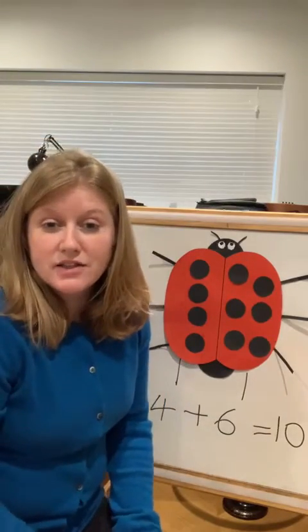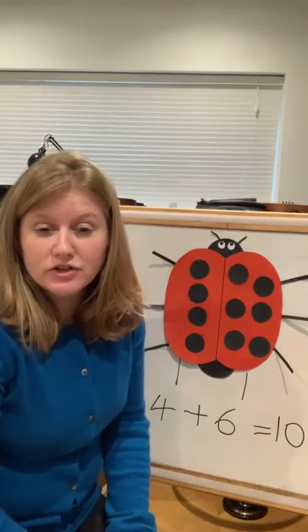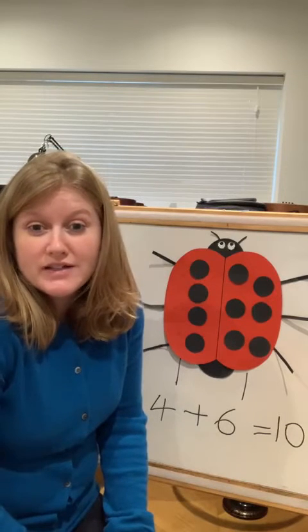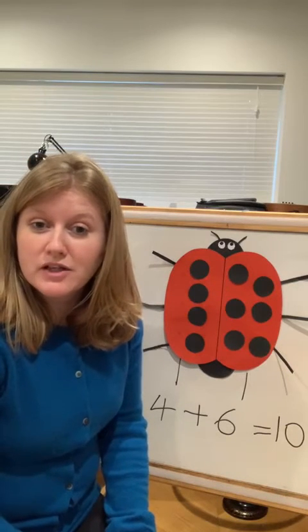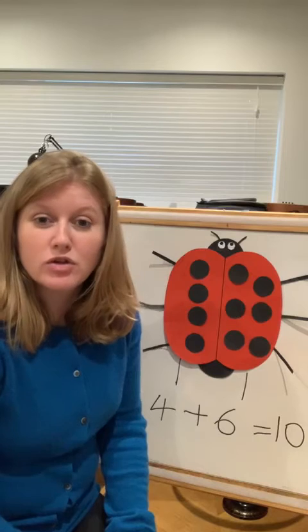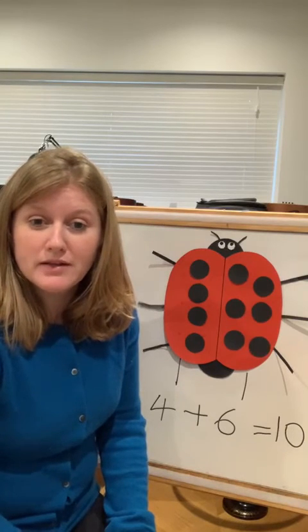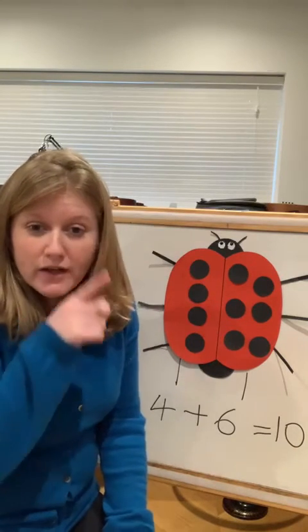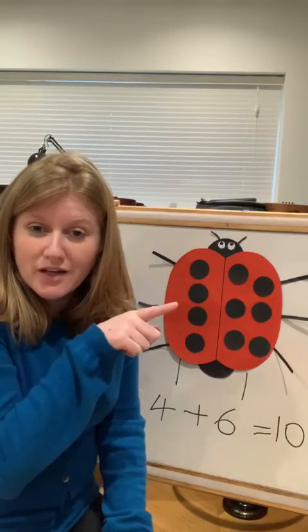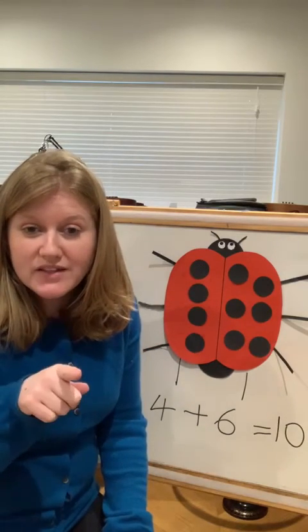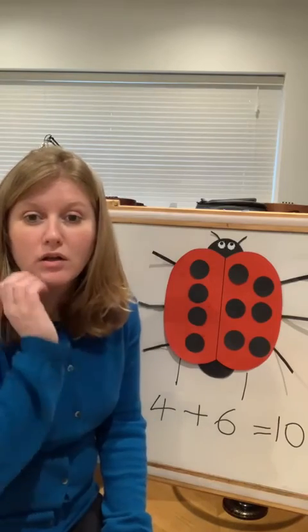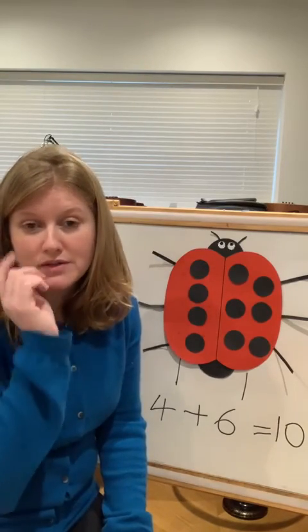Well done — you've been listening so well today children. I'd like you to see if you can find any other ways to make ten. You can do what you did yesterday: draw some ladybirds and draw a line down the middle, then draw a number of spots on one side and a number on the other side, but make sure that the total number of spots adds up to ten.